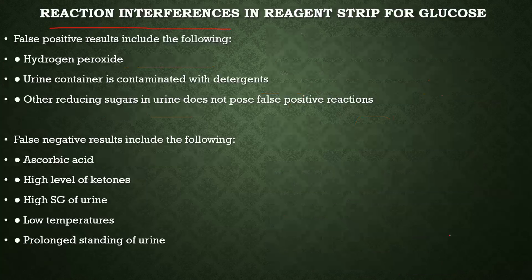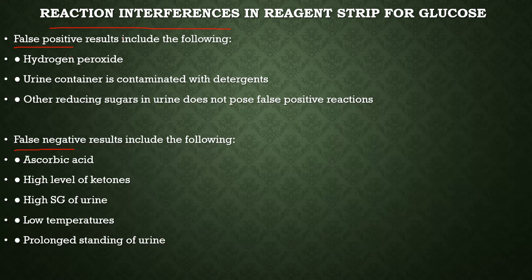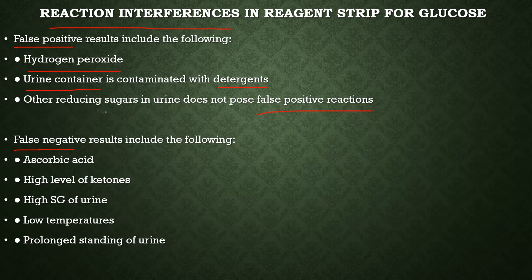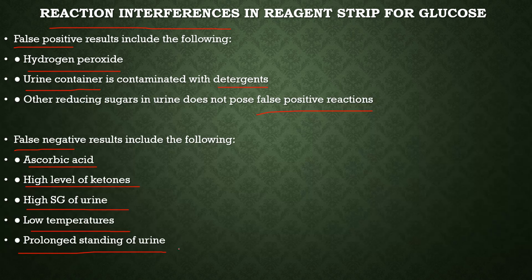Reaction interferences for glucose: false positive results are caused by the presence of hydrogen peroxide in urine and urine containers contaminated with detergents. False negative results are caused by ascorbic acid, high levels of ketones, high specific gravity, low temperature, and prolonged standing of urine.